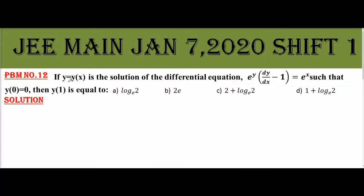Problem number 12: If y equal y of x is the solution of the differential equation e power y into dy by dx minus 1 equal e power x, such that y of 0 equal 0, then y of 1 is equal to.